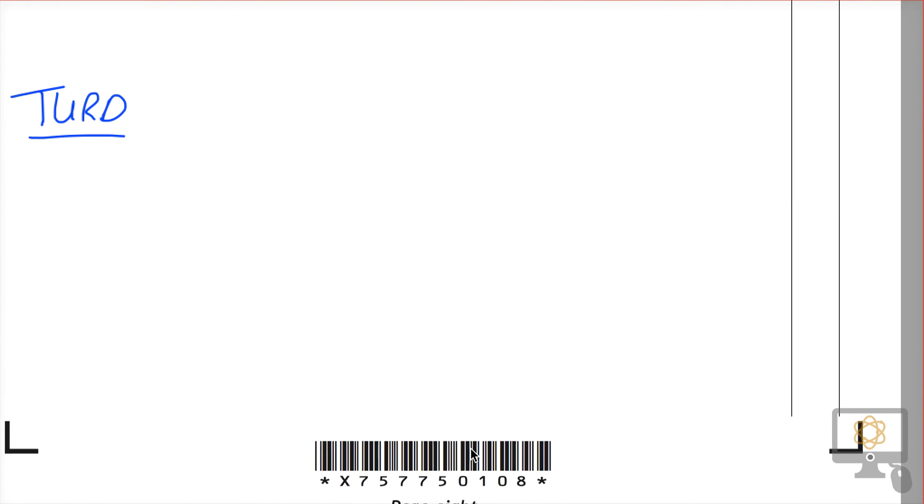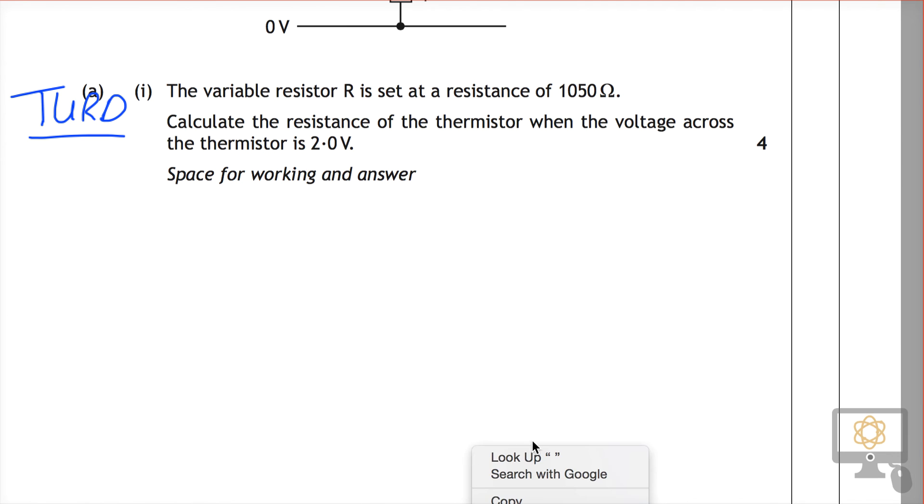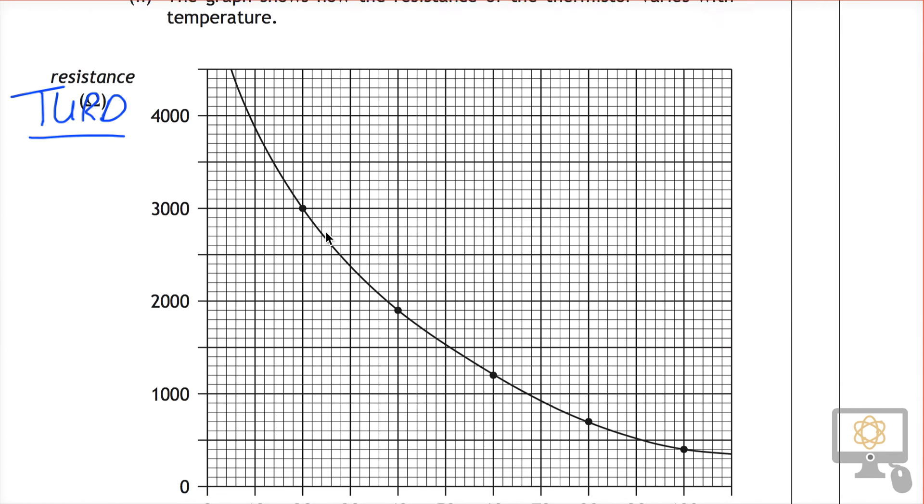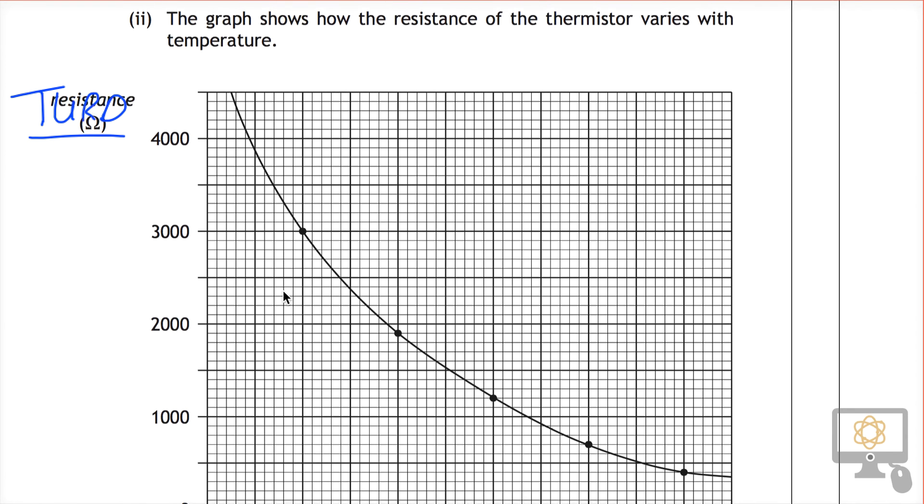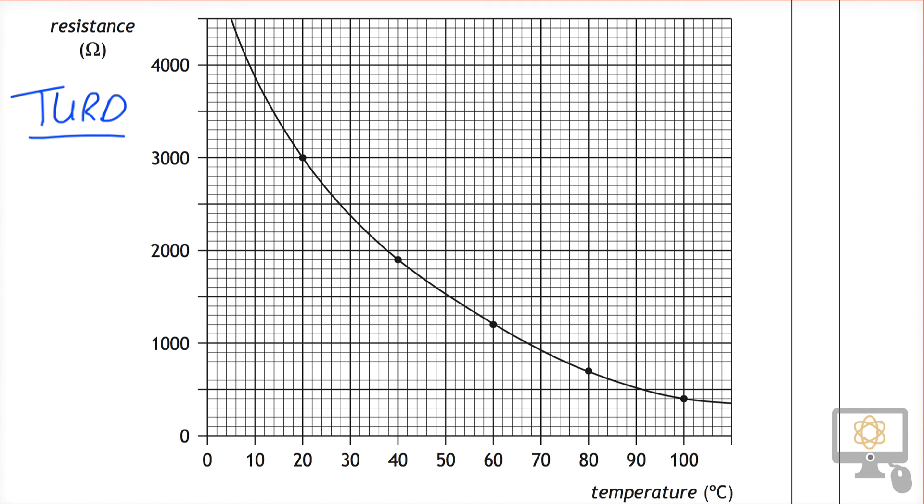Well, if we look back at the original question, question 1, we were asked to determine the resistance of the thermistor when the voltage across it was 2. And we did that and we found that that was 700 ohms. So when we look at the graph, we need to find where 700 ohms is and use that value to find the temperature.